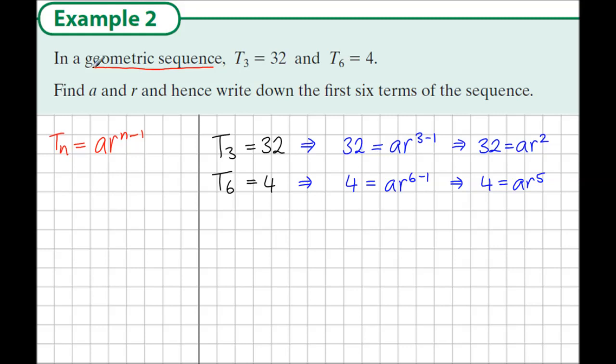So now we have two pieces of information. We have two equations. Let's label these equations 1 and 2. We want to find the value of a and r, so we need two equations to do this, and we have two equations. Now the easiest way to deal with these is if we divide equation 2 by equation 1.